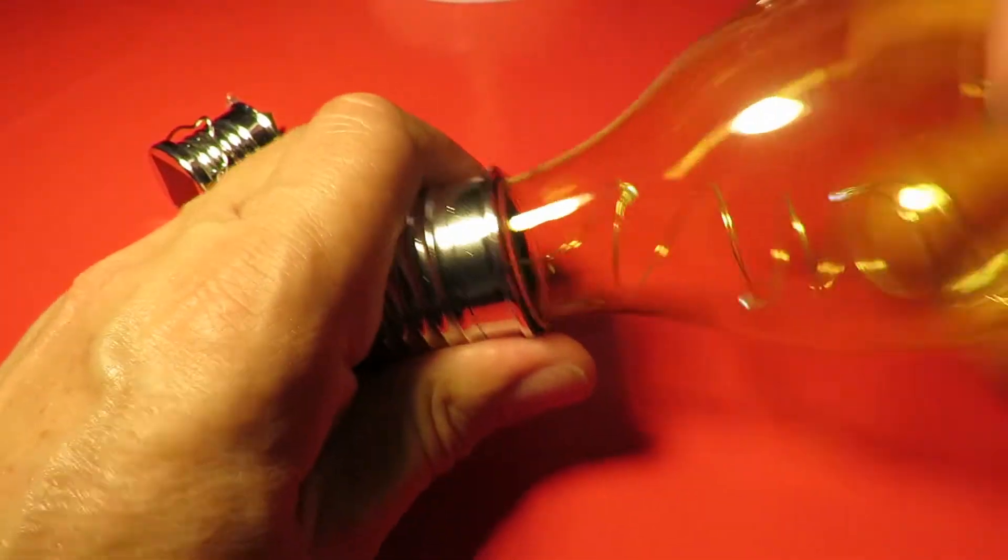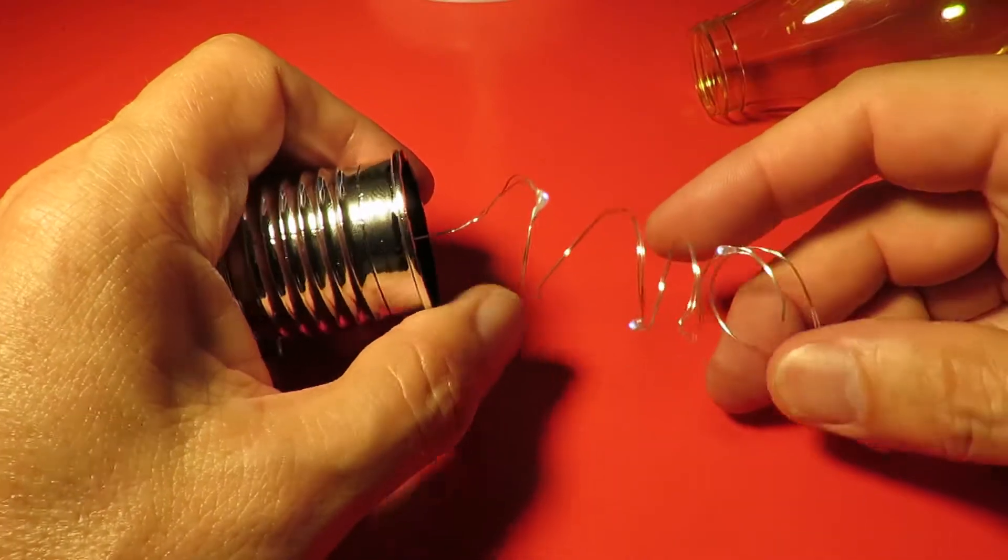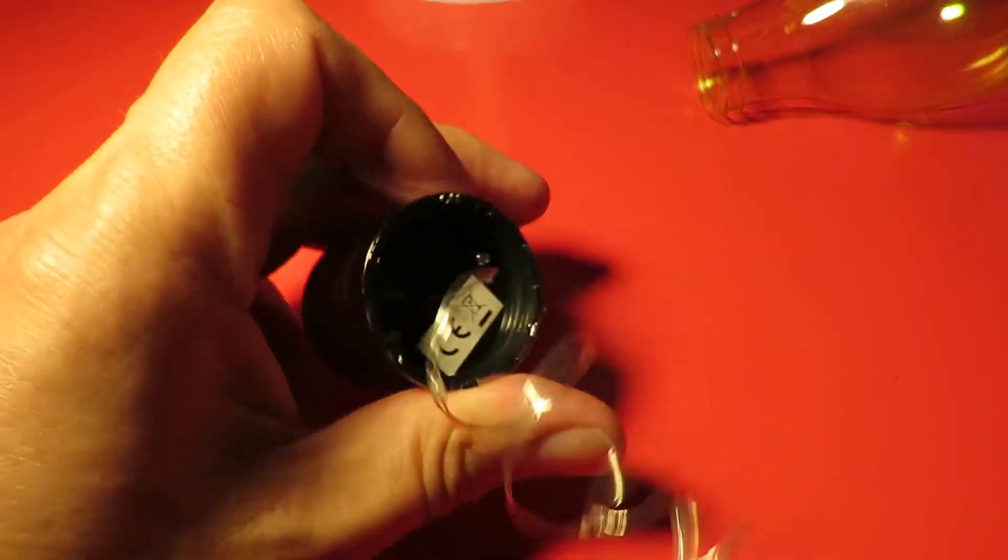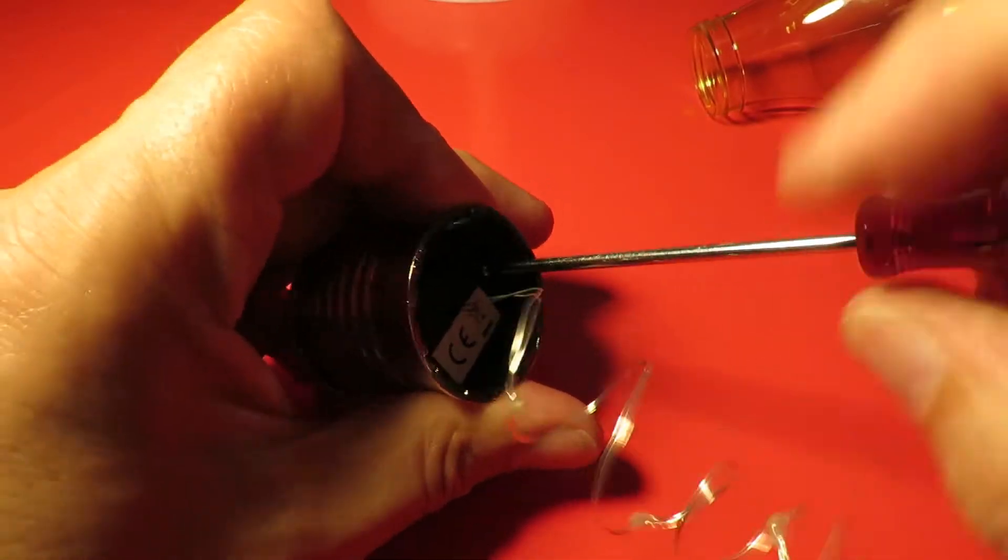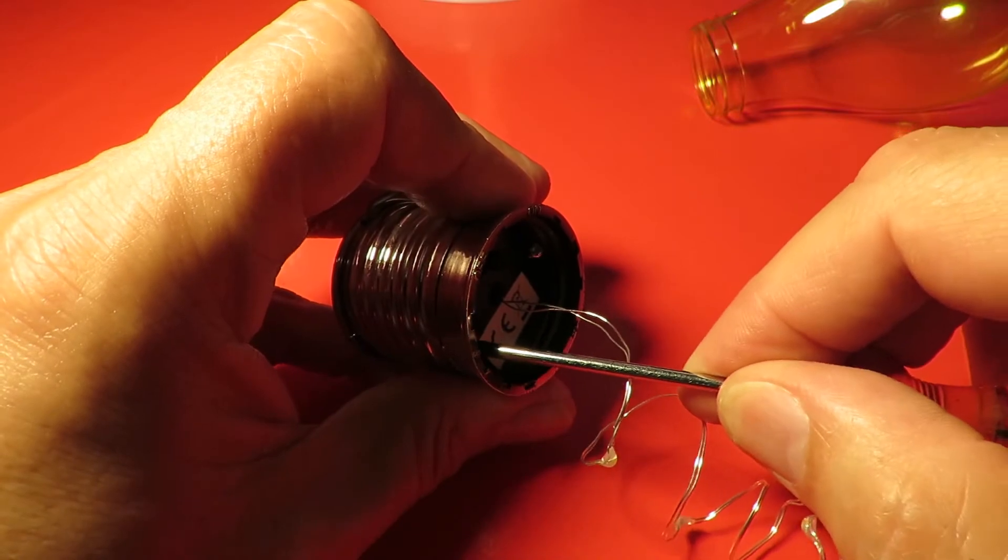And in this one, we've got a small string of LEDs. One, two, three, four LEDs. And the circuit board is in there.